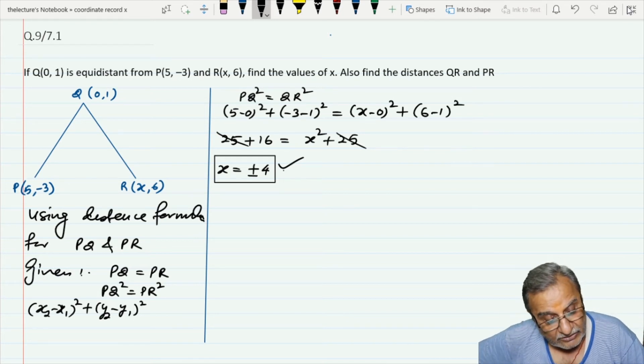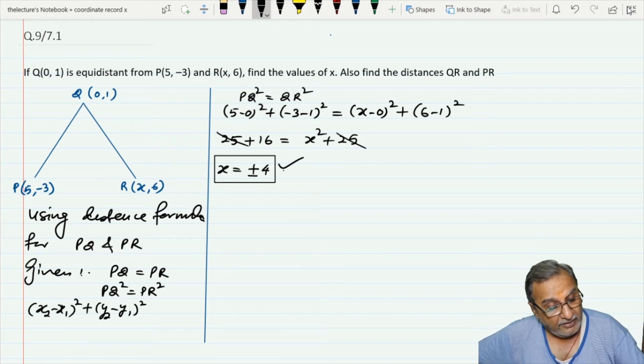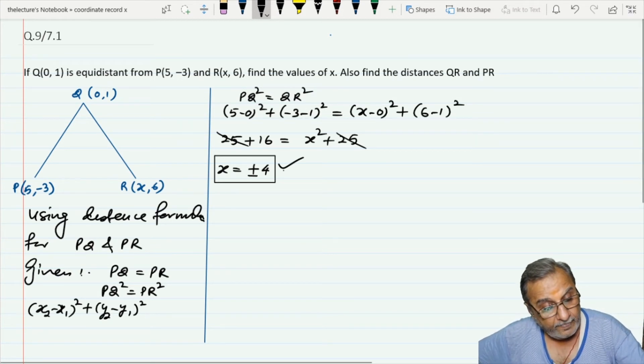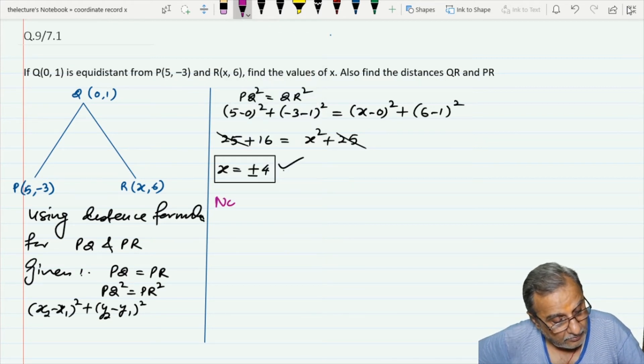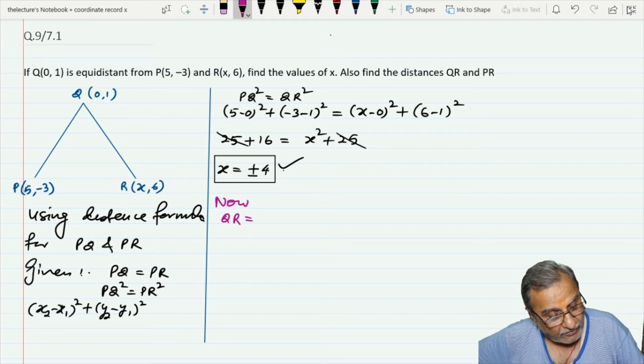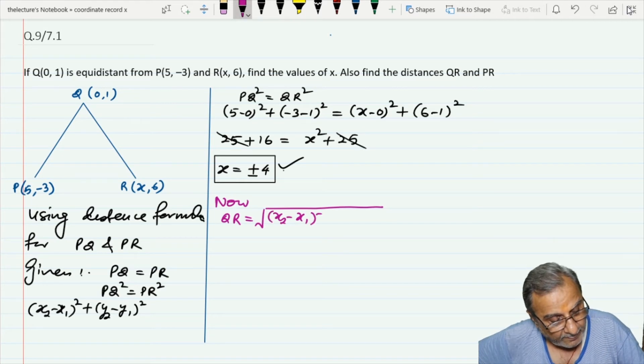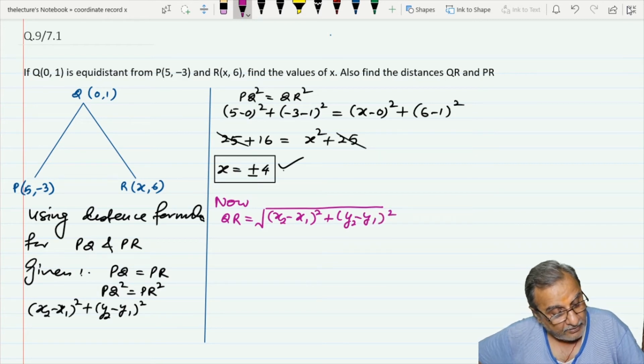The question also says to find the distance QR. Now QR equals √[(x₂-x₁)² + (y₂-y₁)²].